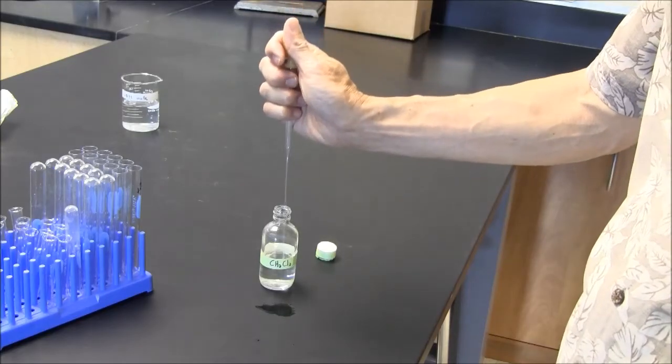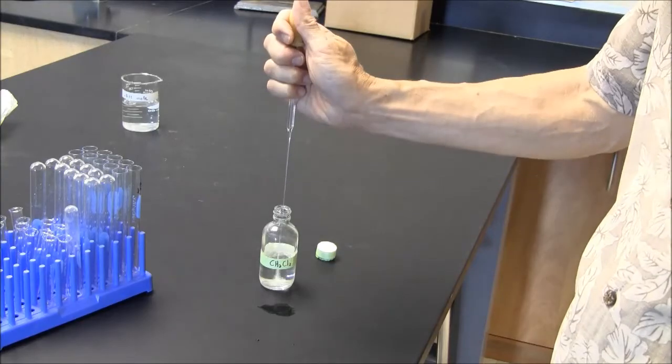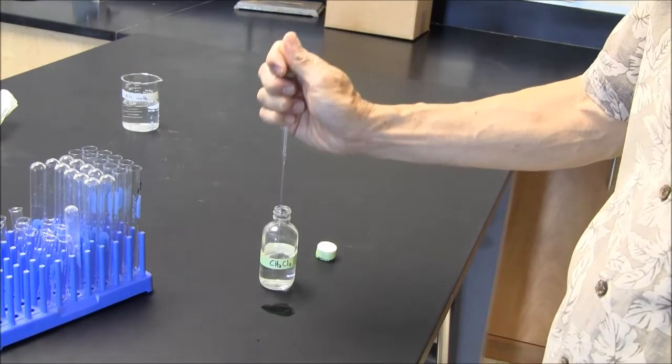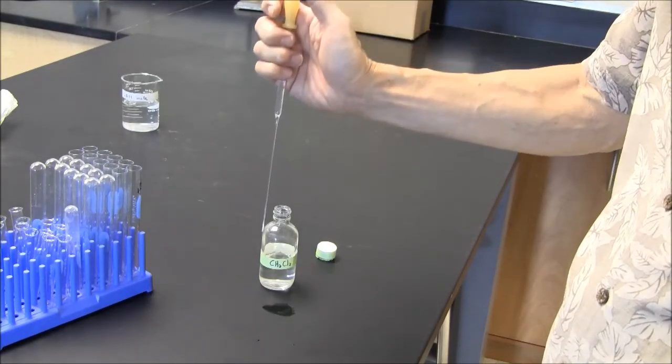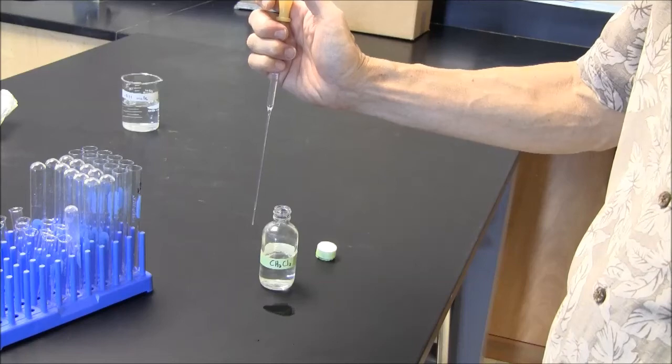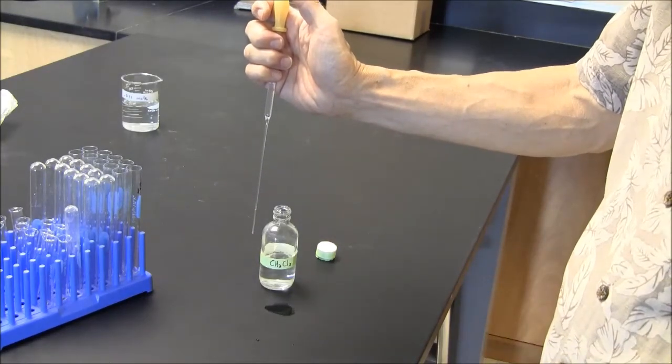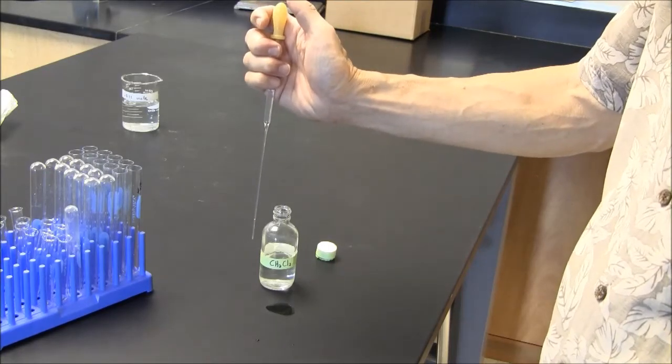So if I'm pipetting dichloromethane, it's a good idea to pipette up and down a couple of times. And I have a much better chance now of having it not drip. Still, I don't want to wait too long, so I should have my vessel prepared for receiving the dichloromethane. But this is a good trick to keep the dichloromethane in your pipette.